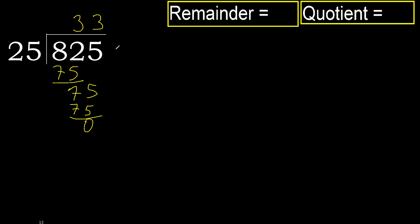Next. There is no next number, therefore finish it. 825 divided by 25 is 33.